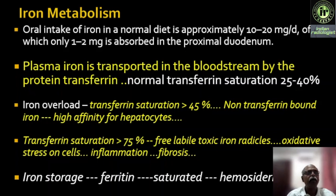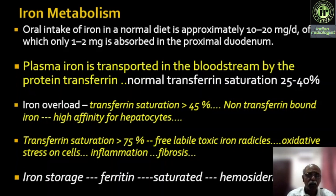Once the iron is absorbed in the duodenum, it goes into the plasma, where the iron is transported by a protein known as transferrin — transferrin is the transport medium of plasma iron after absorption in the gut. Normal transferrin saturation is 25 to 40 percent. When there is excessive iron absorption because of abnormality of hepcidin or excessive iron intake and transferrin saturation exceeds more than 45 percent, the transferrin cannot accommodate the extra iron. That iron is known as non-transferrin bound iron, which remains in the plasma.